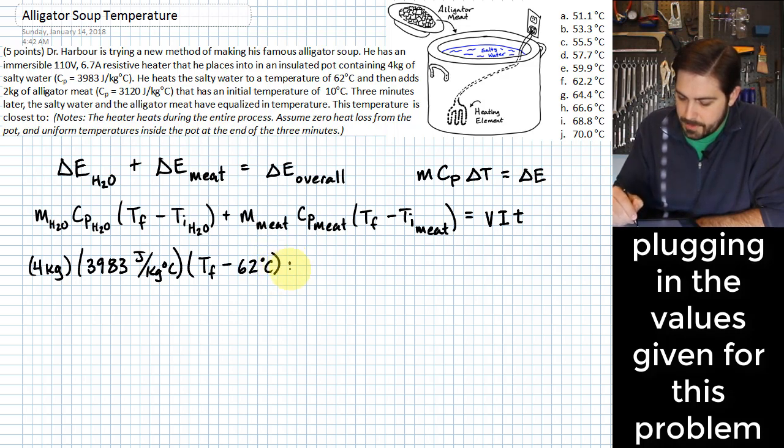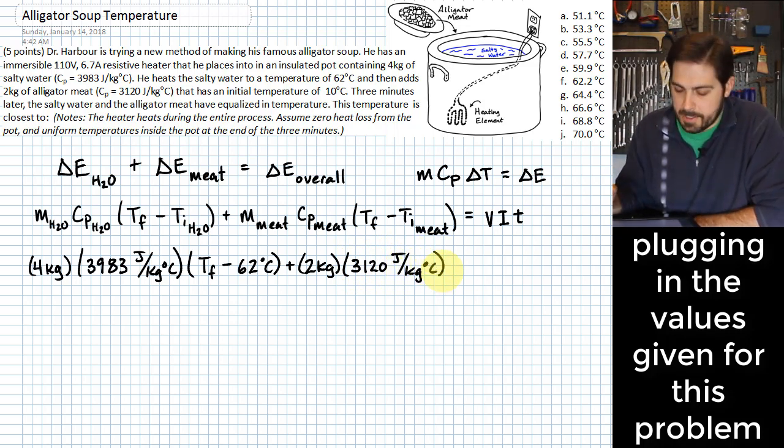To this we are going to add the mass of the meat, 2 kilograms, the specific heat value of the meat, which is 3120 joules per kilogram degrees C, and then we will multiply by again the difference between our final temperature and the initial temperature of the meat, which is 10 degrees C.